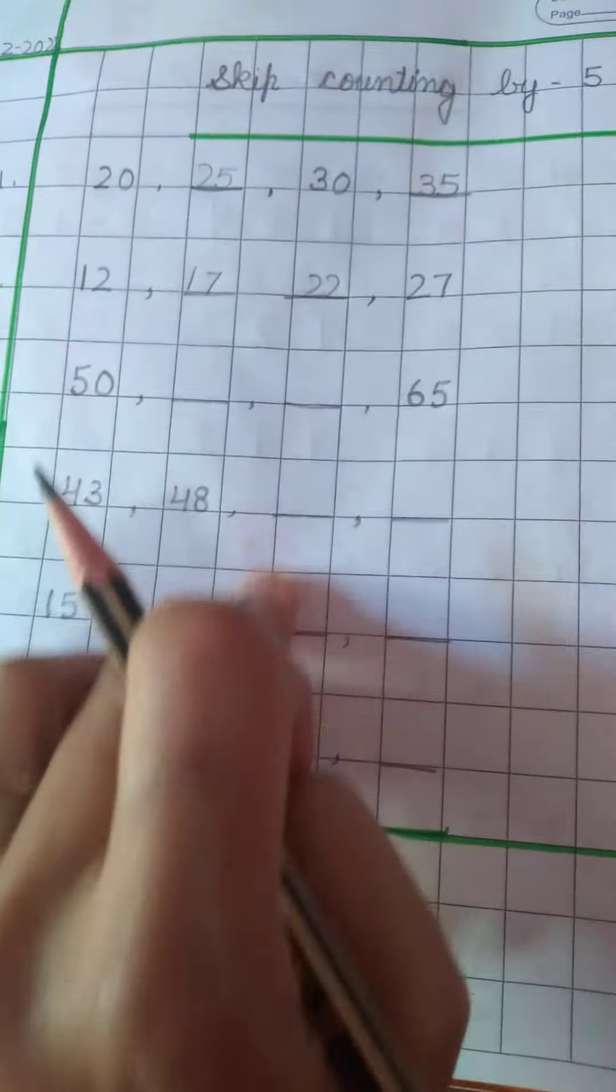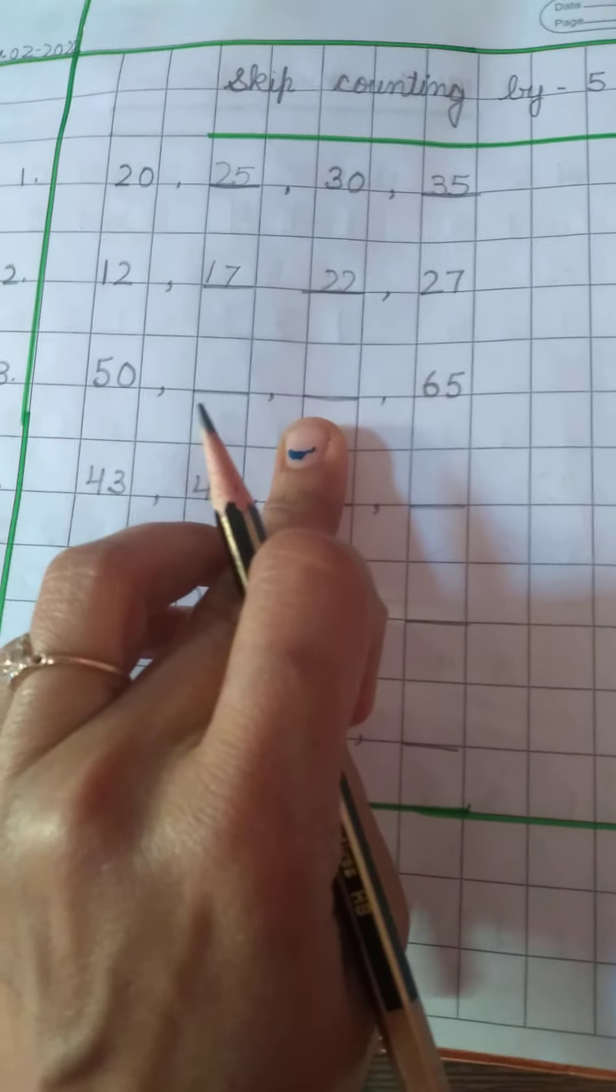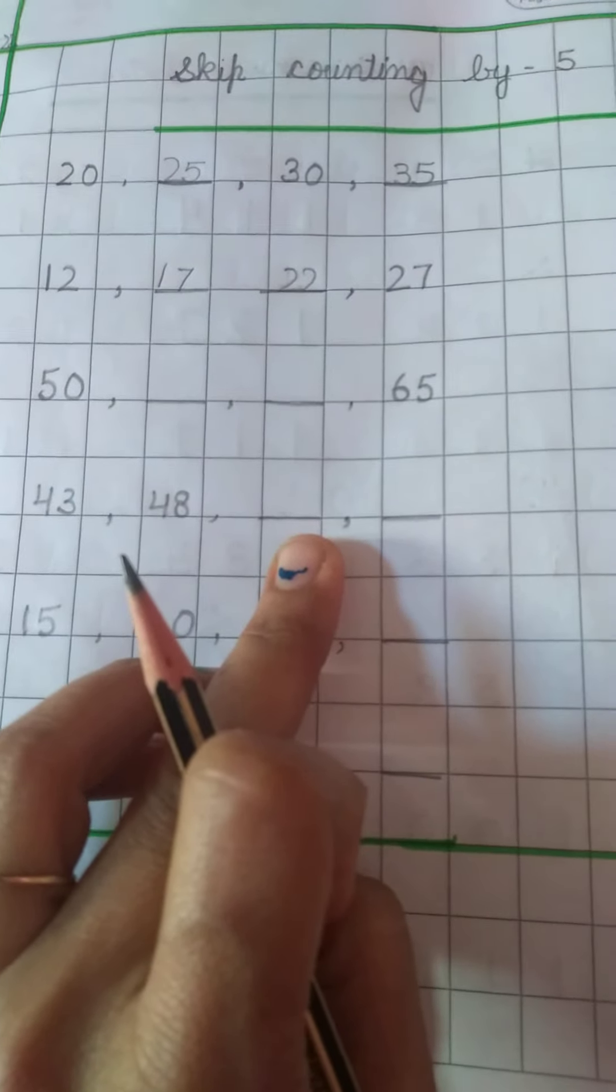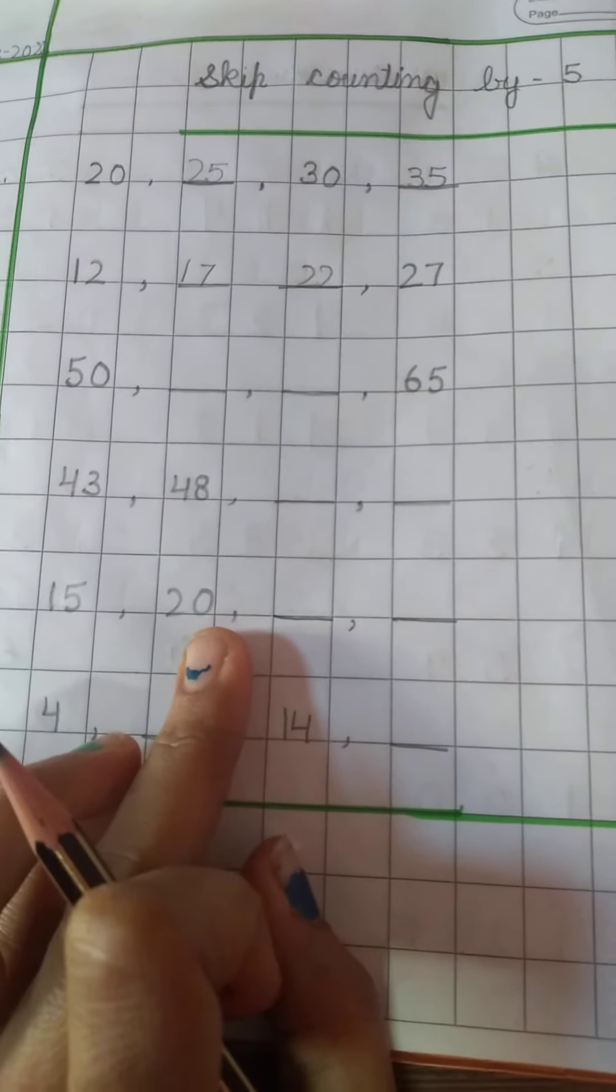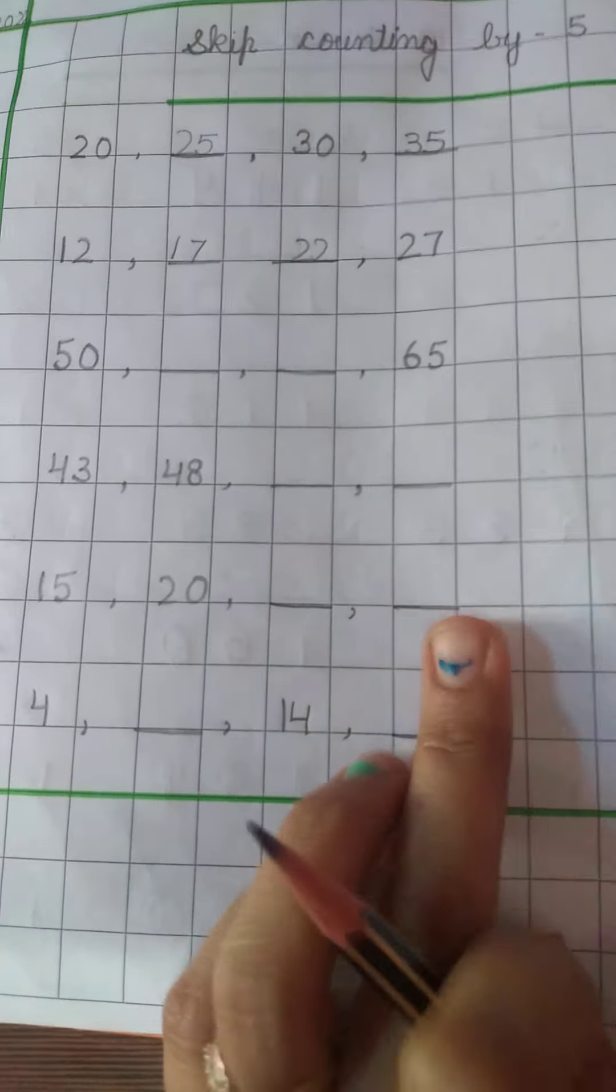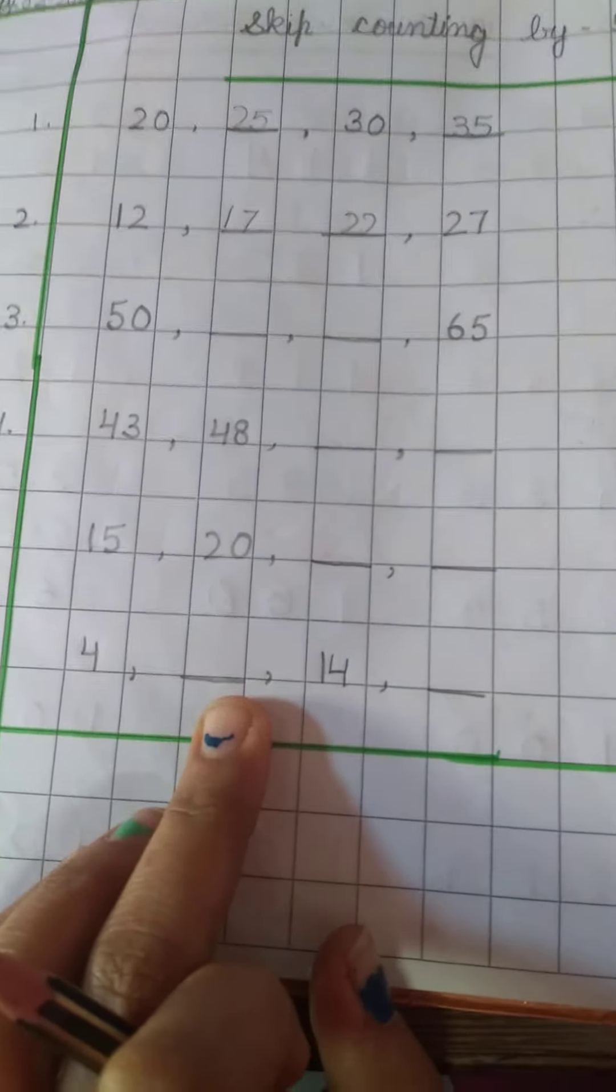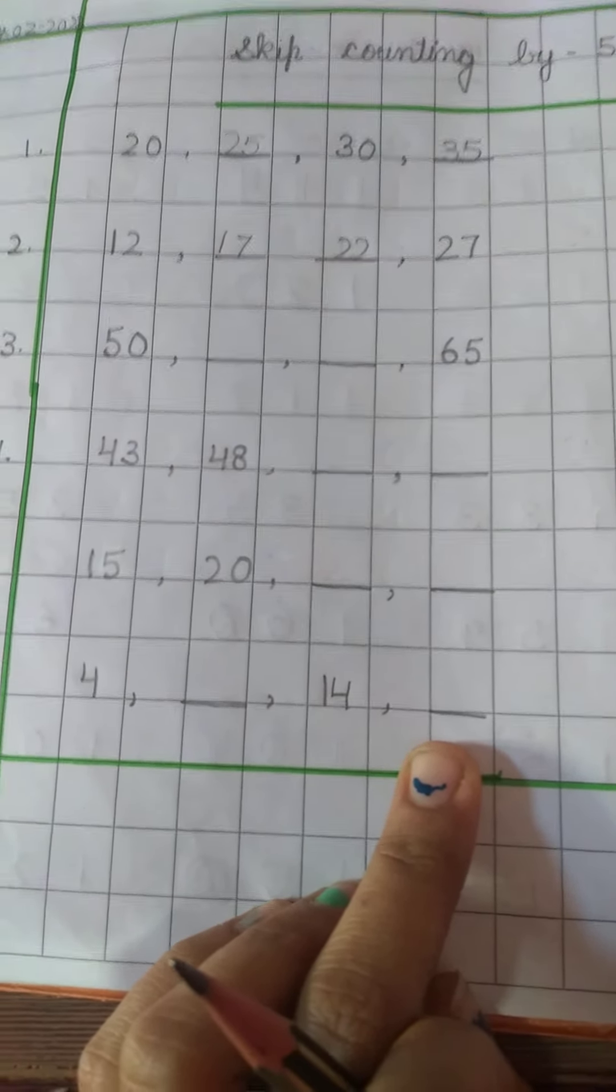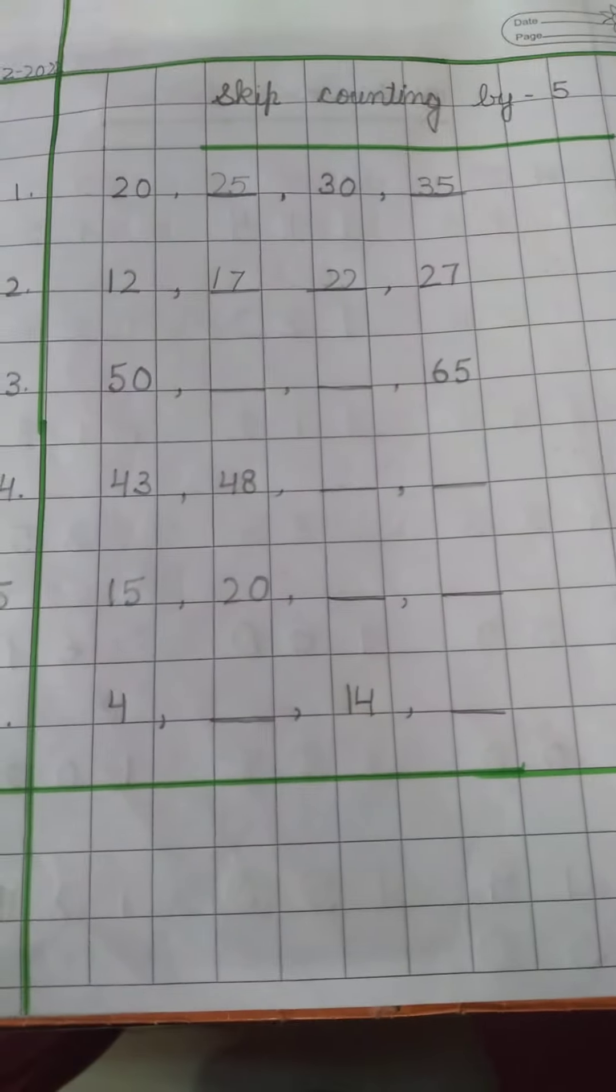So this is how you have to solve it. After 50 what will come? Before 65 what will come? After 48 what will come? In the next digit so 15, 20 and then yes 25 and 30. 4 after 4, 14 and after 14. So like this you have to complete this notebook exercise. Bye bye. Take care. Bye bye. Thank you.